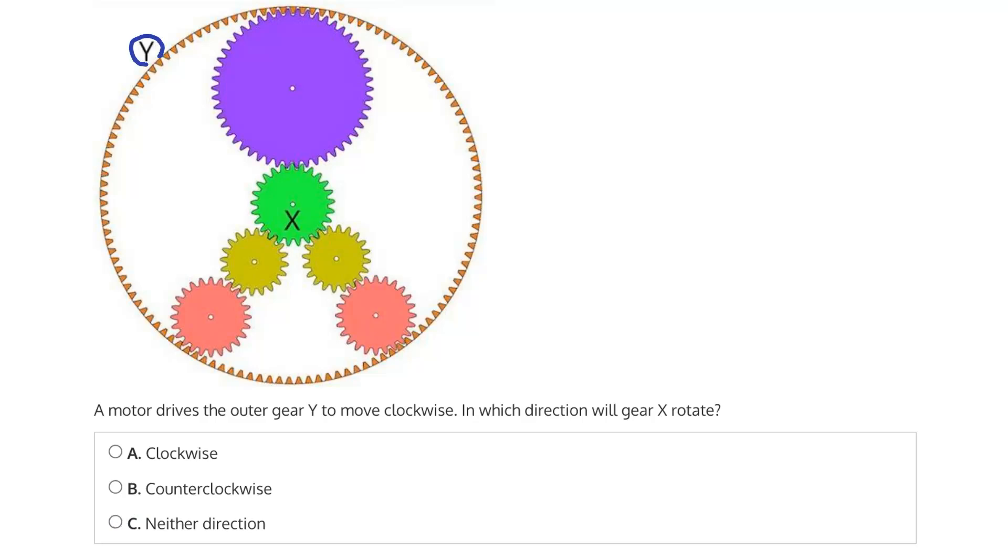So again, gear Y is this outer gear here. It's this large orange circle that encompasses the other gears. As gear Y rotates clockwise, we see that the teeth mesh with three different gears. We have this gear at the top, this large purple gear, which we can call gear A. And then we have these bottom two gears, which we can call B and C.